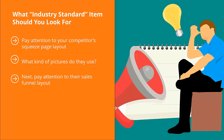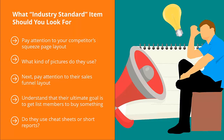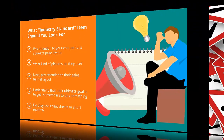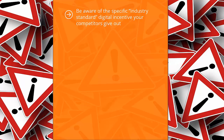Be aware of how they do this — how do they take prospects through the sales process? Understand that their ultimate goal is to get list members to buy something. Try to figure out how their sales funnel is laid out and how it seeks to convert list members. Also pay attention to the freebies or incentives your competitors offer to get people to sign up to their mailing list. Do they use cheat sheets or short reports? Do they give away full books? Do they offer a special video or promise insider information people must sign up to access? Be aware of the specific industry standard digital incentive your competitors give out — you are going to have to offer the same, though you can tweak it later.